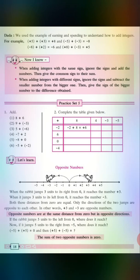When it jumps 3 units to its left from 0, where will it reach? Yes, it reaches the number minus 3. Both these distances from 0 are equal. Only the directions of the two jumps are opposite to each other. In other words, plus 3 and minus 3 are which numbers? Yes, they are the opposite numbers.